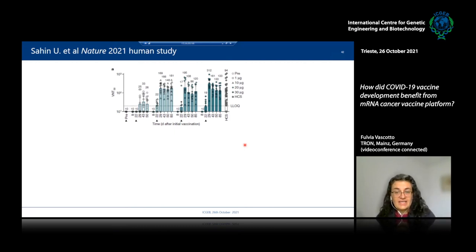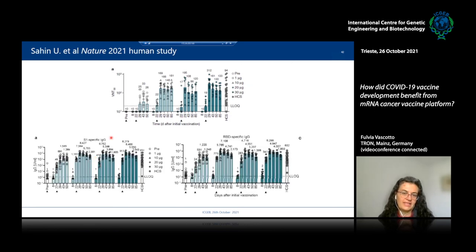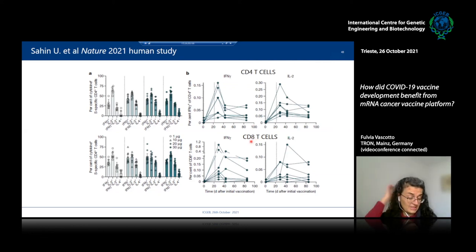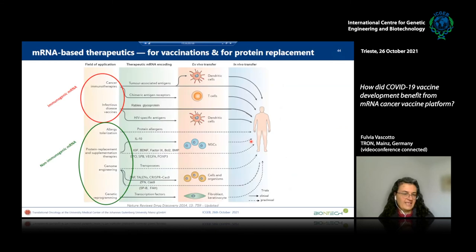The published data on neutralization capacity of patient IgG extends up to 85 days after initial vaccination, covering different doses and both S1- and RBD-specific IgG isotypes. Most importantly, it is not only the humoral response but also the induction of CD4 helper T cells and CD8 cytotoxic T cells — the most difficult to obtain but the most important effector cells for the vaccine to reject virally infected cells.